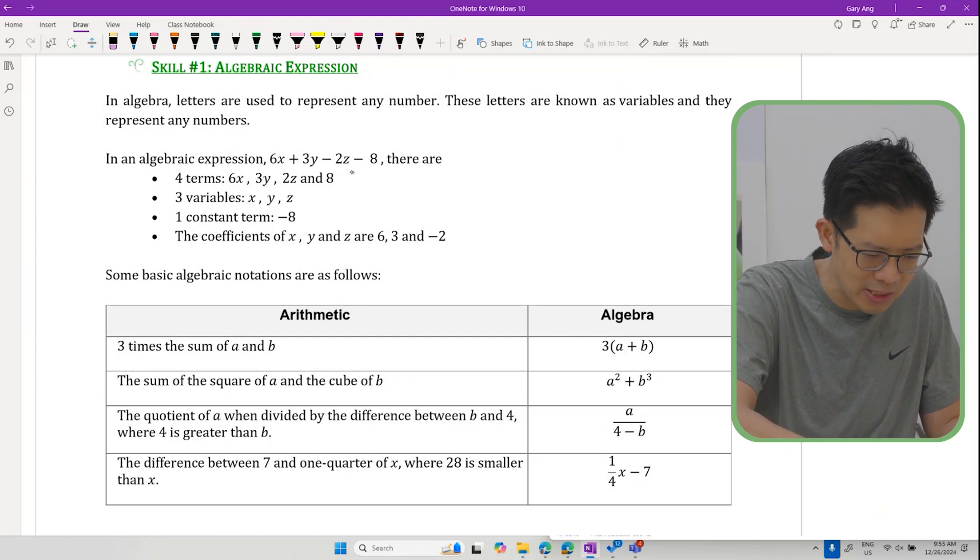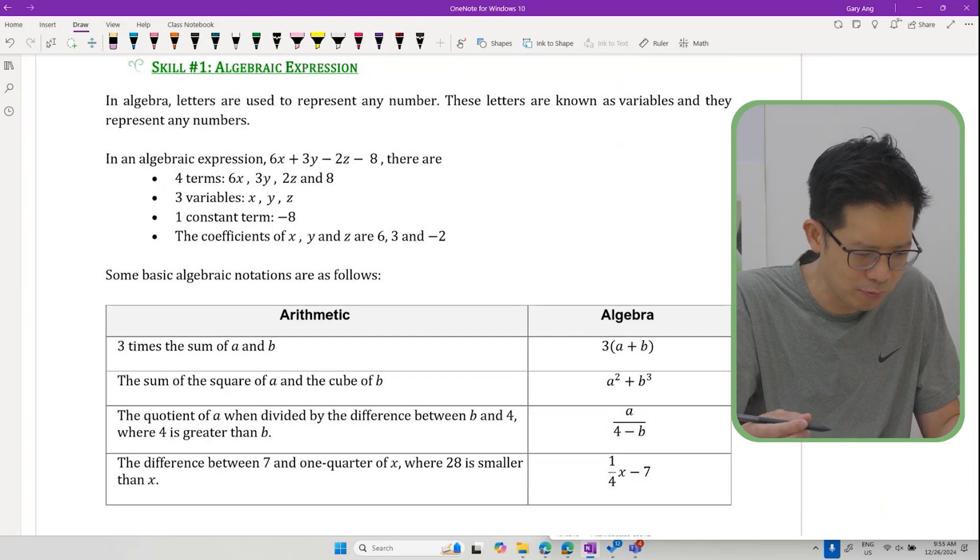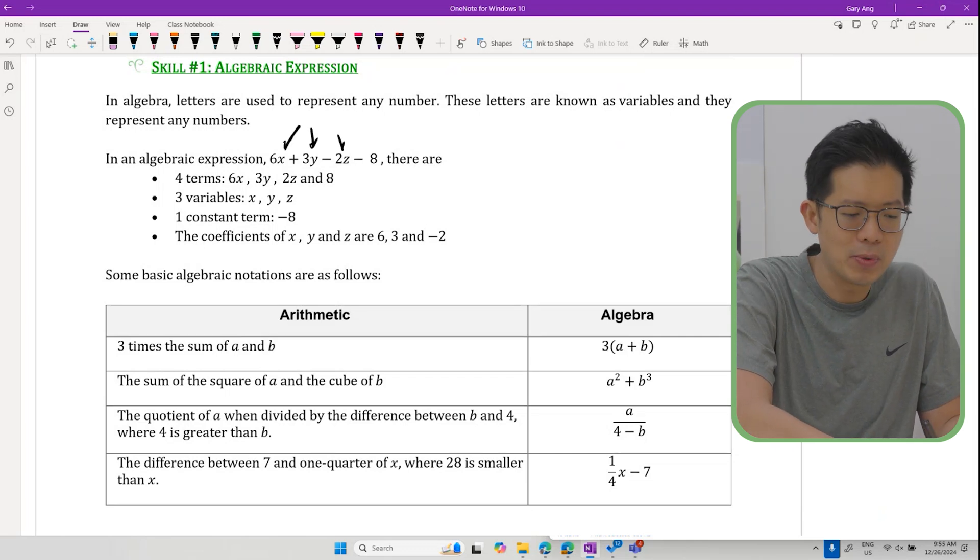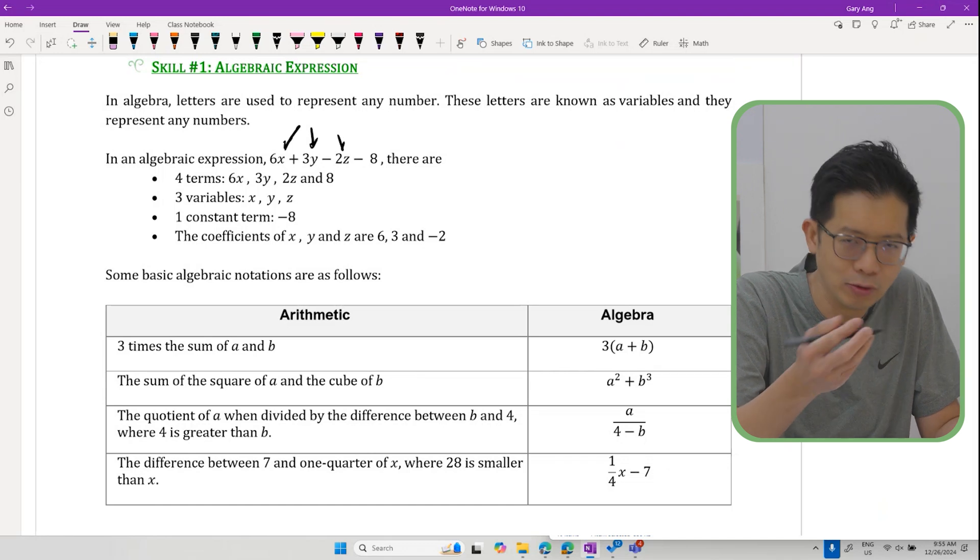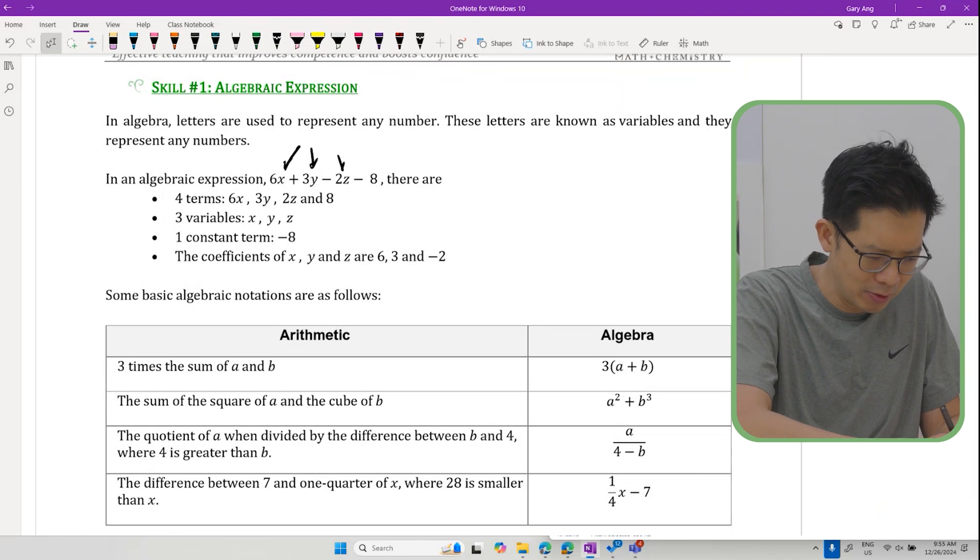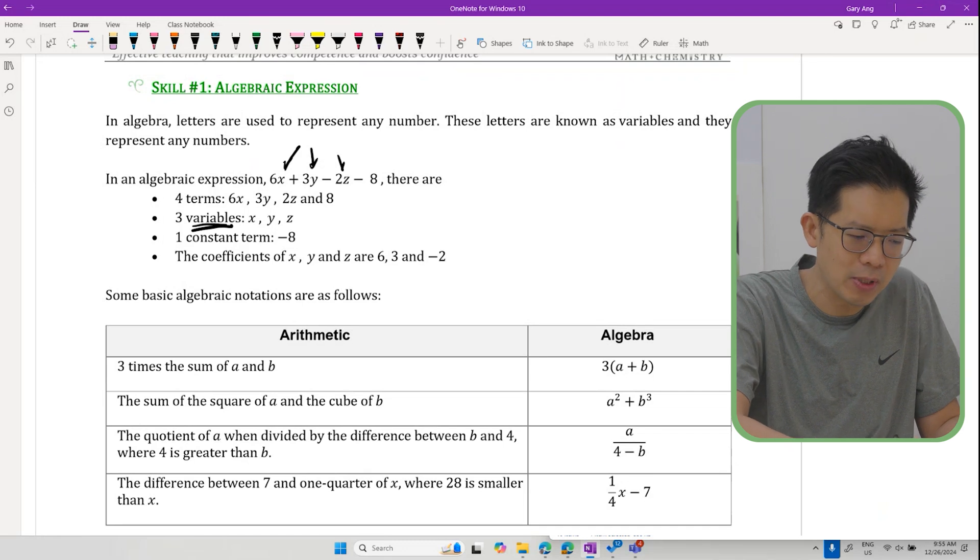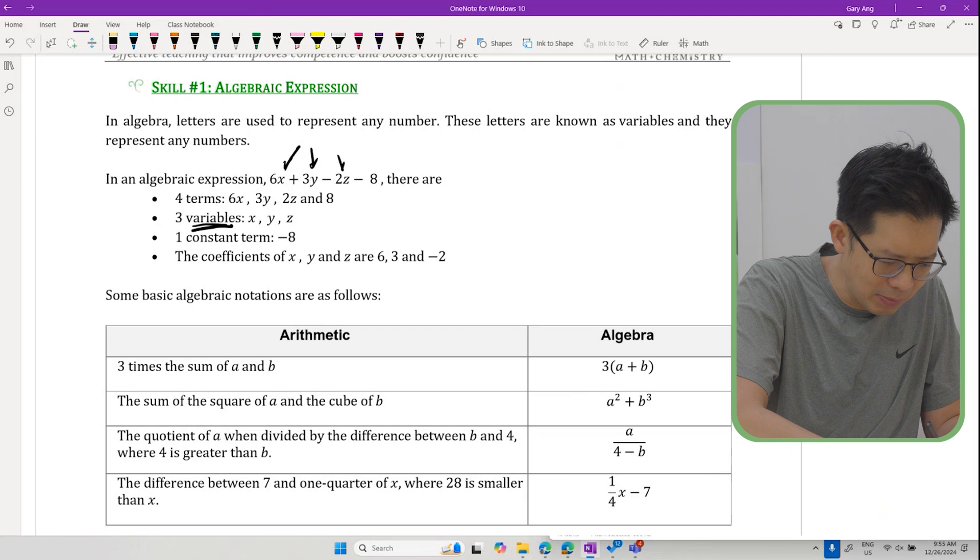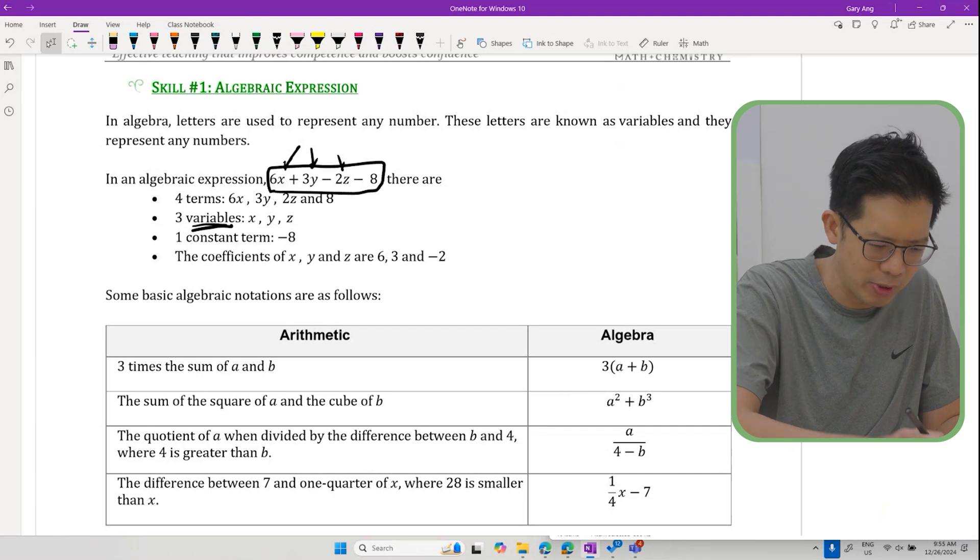In algebraic expressions there are also terms that we need to get used to. For example, X, Y, Z are representing numbers, usually what we call unknowns. However, these numbers are what we call variables because they vary - they are not fixed at the moment.